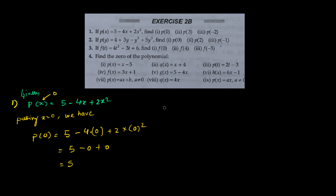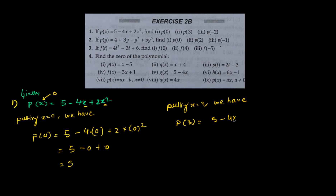Next, to find p(3), we replace x with 3. Putting x equals to 3, we get 5 minus 4 times 3 plus 2 times 3 squared. That gives 5 minus 12 plus 2 times 9, which is 5 minus 12 plus 18. So 12 plus 5 minus 18 gives p(3) equals 11.